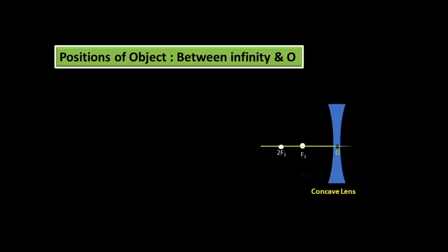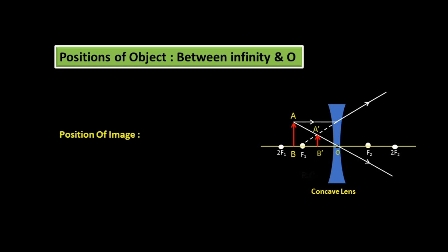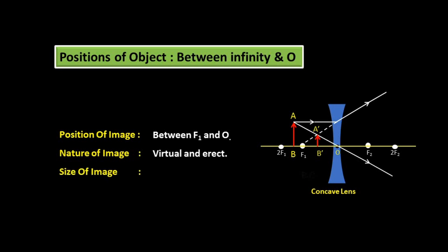Position of Object between Infinity and Optical Center: The ray coming from Object AB is parallel to the Principal Axis. After refraction, it diverges and appears to be coming from Focus F1. Another ray coming from the object passes through the Optical Center without any deviation. The Position of Image A'B' is between F1 and the Optical Center. Nature of Image: Virtual and Erect. Size of Image: Diminished.